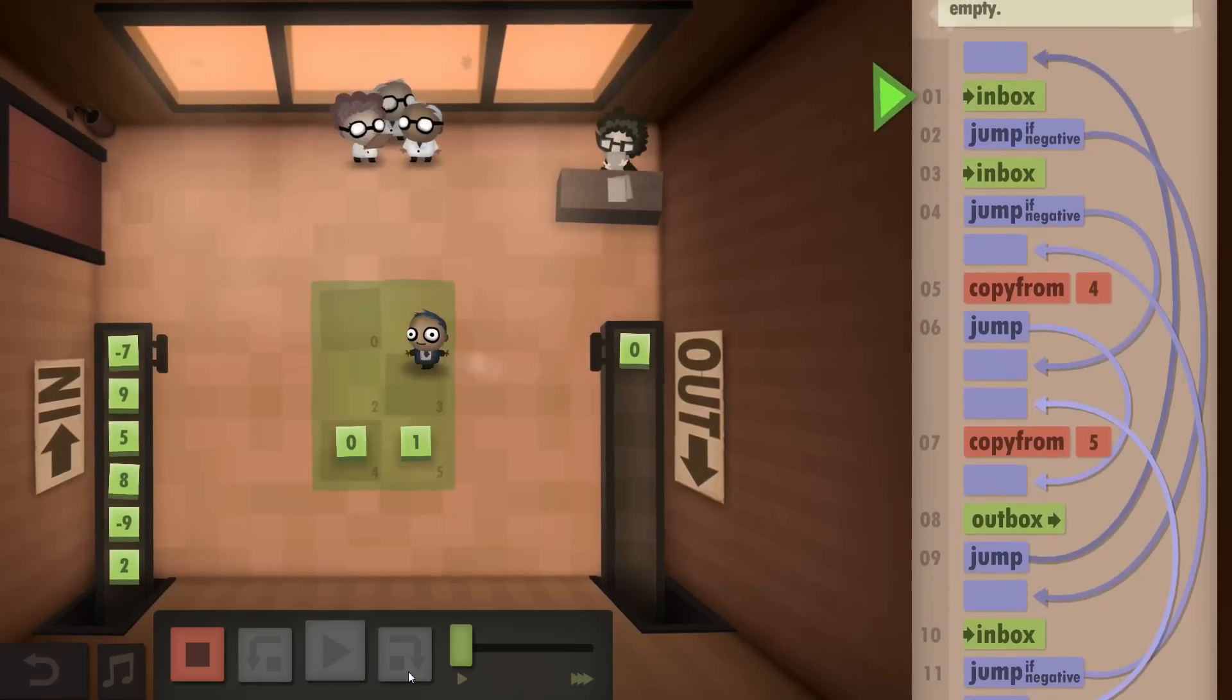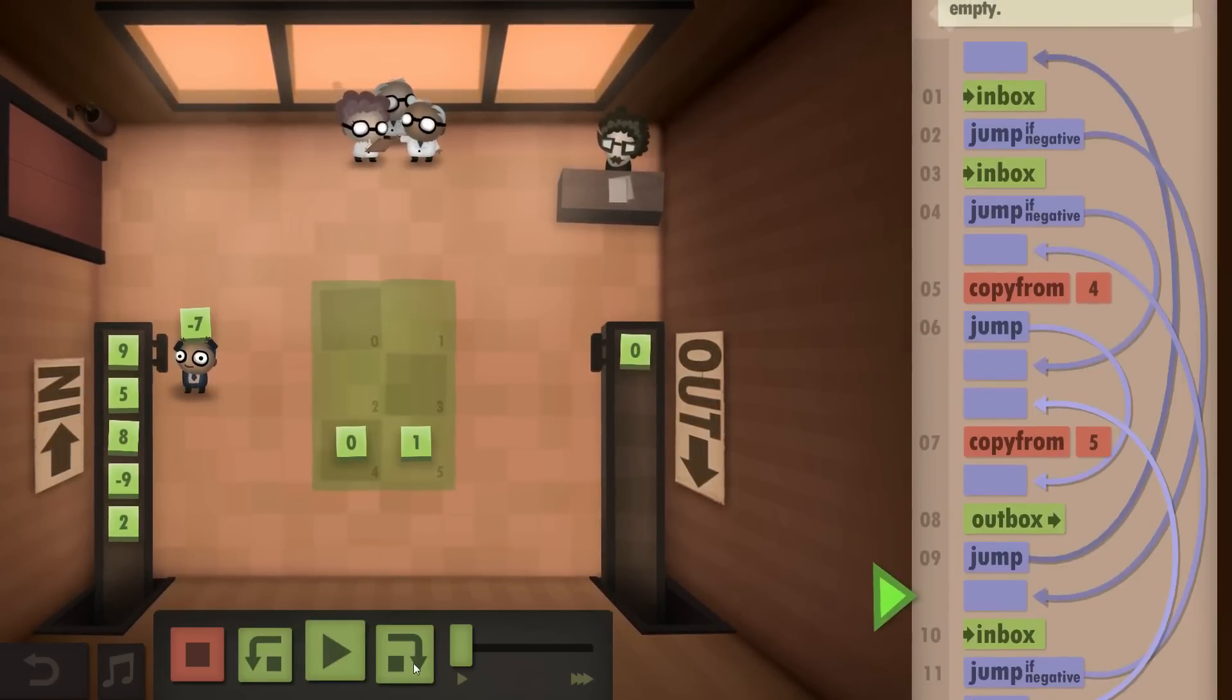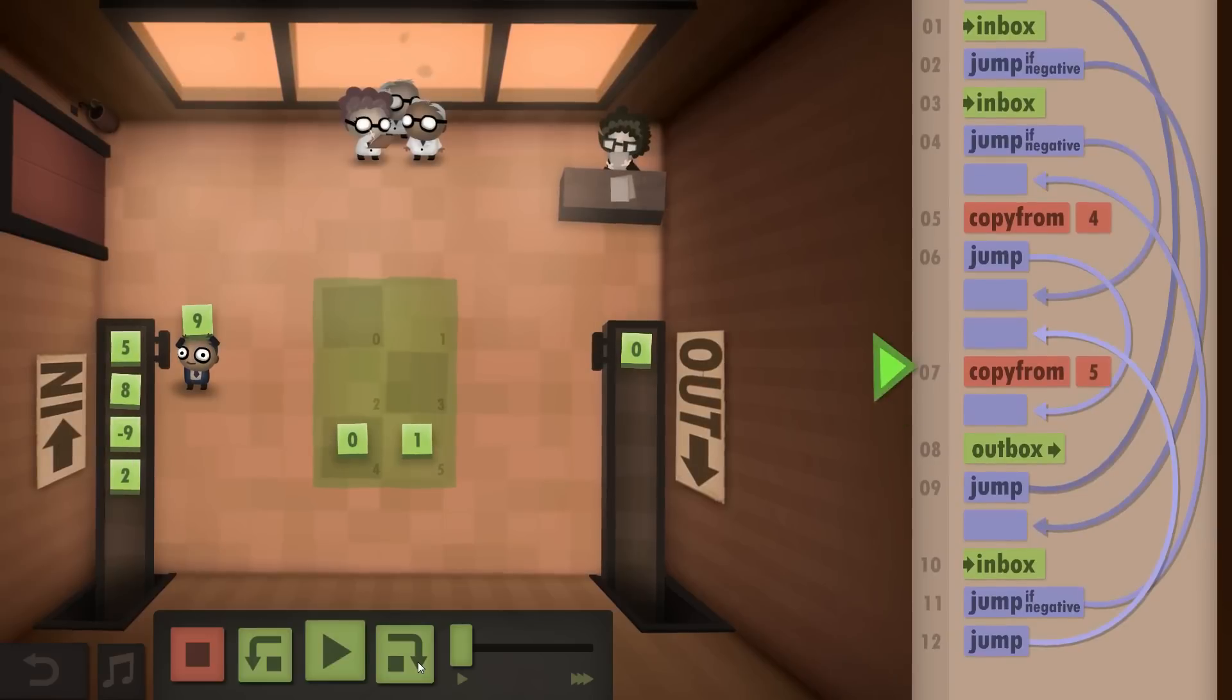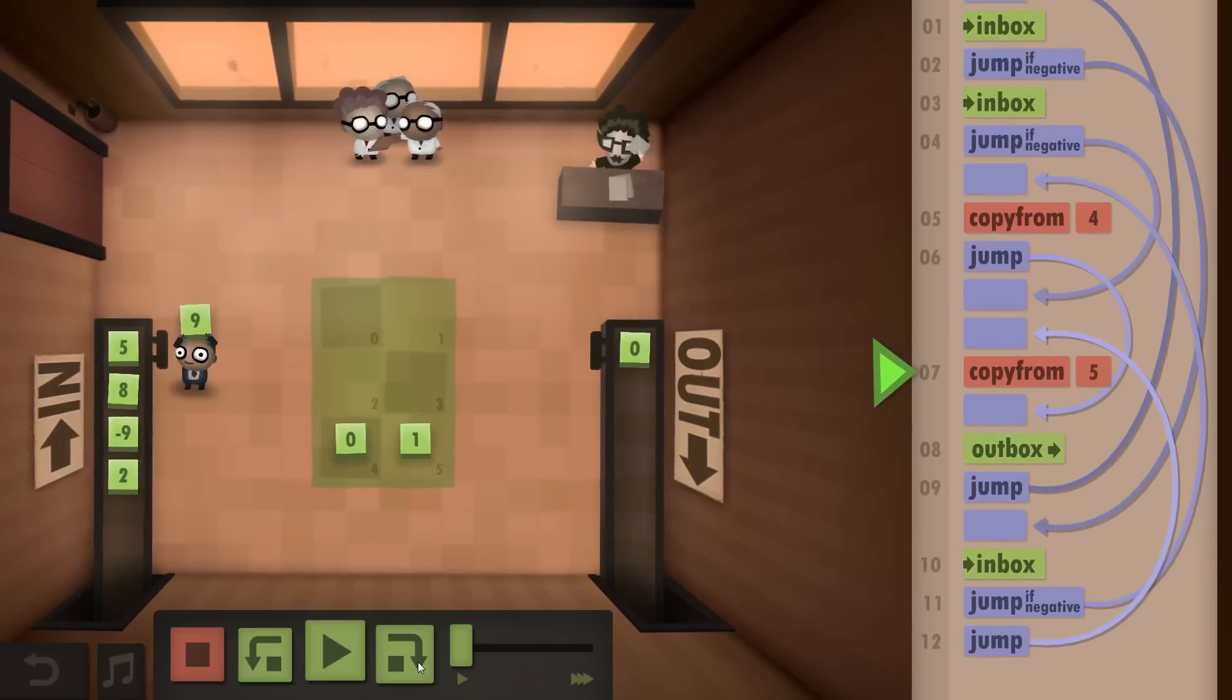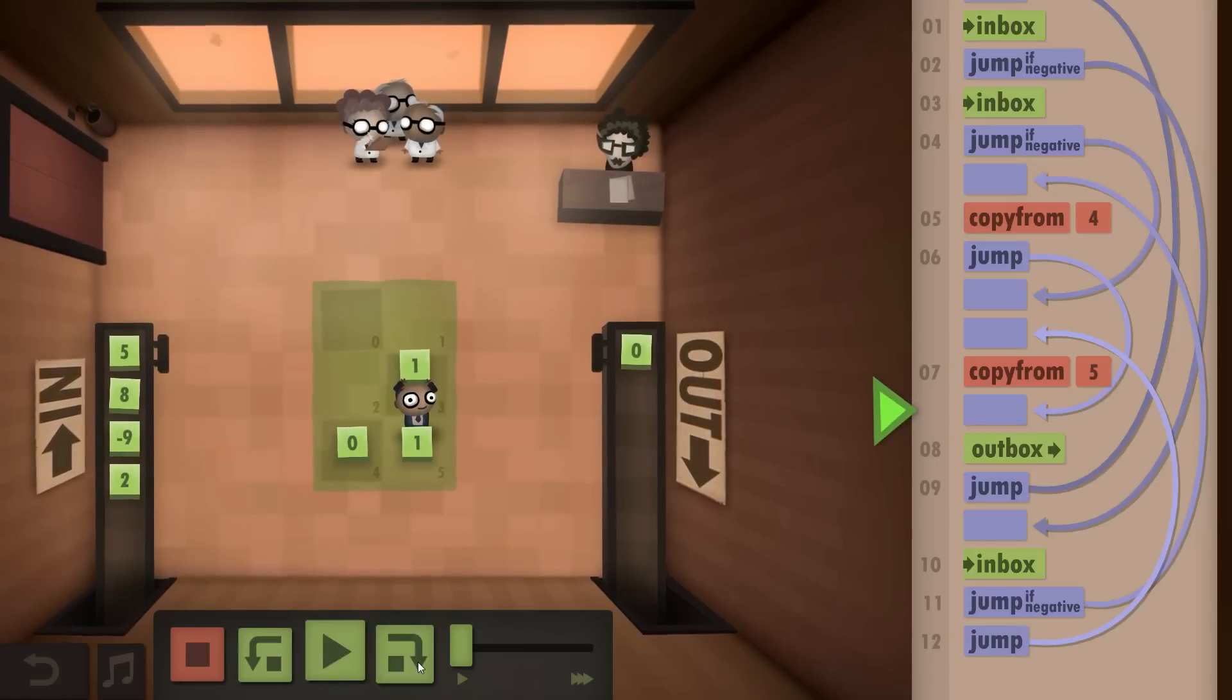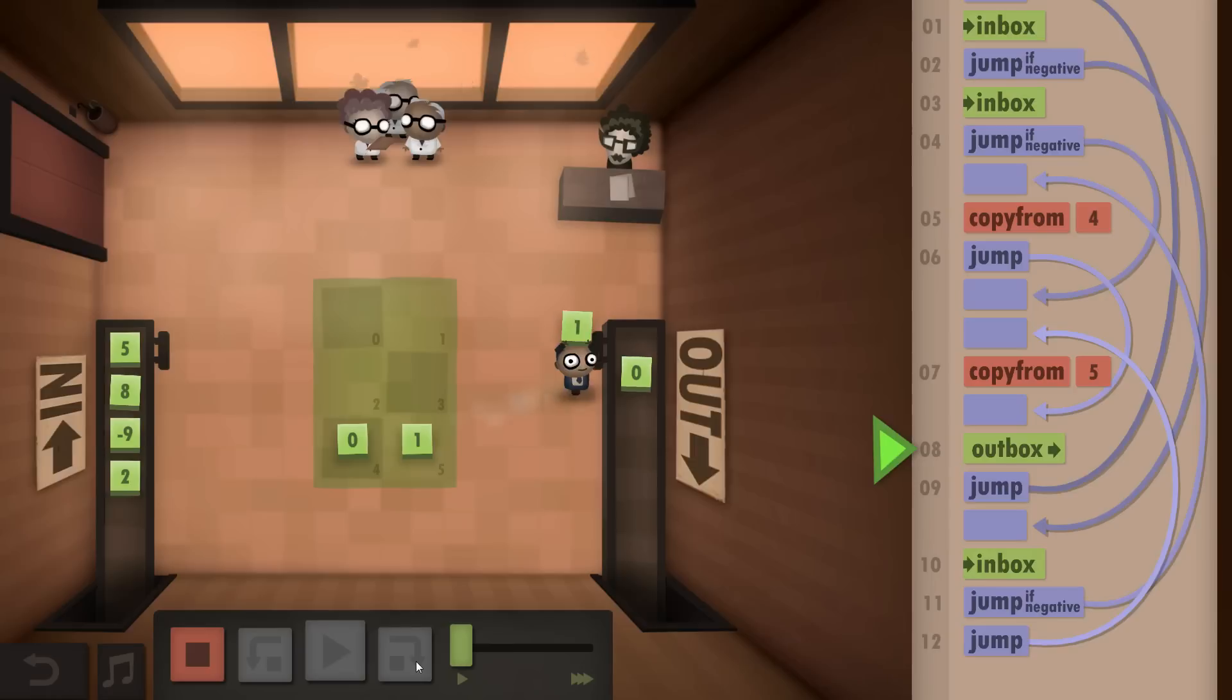We go to the Inbox again. Again, it's a negative. So we jump down here. We take from the Inbox. In this case, it's not a negative. So we jump right up there to copy from the 5, which is the 1, which is the different sign. And then we Outbox it.